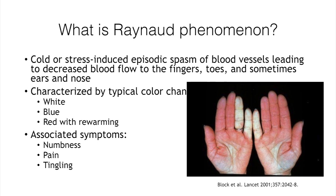Raynaud's phenomenon is defined by the episodic spasm of the blood vessels and leads to color changes in the fingers due to decreased blood flow. It can affect any distal area of the body, so it can affect the fingers and toes, sometimes the ears and the nose. Classically you should have typical color changes with white discoloration when there is decreased blood flow, blue when there is complete lack of blood flow, and then red upon rewarming. Associated symptoms are pain, numbness, and tingling in those areas.